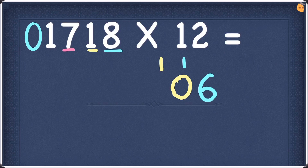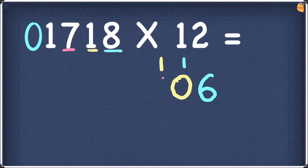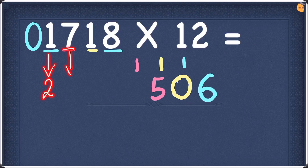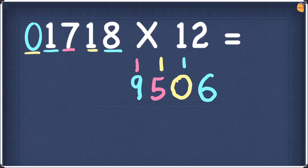Next digit is 7. 7 doubled is 14. 14 plus the number on the right hand side, which is 1, gives 15. Write a 5 and take the 1 as a carry. Next digit is 1. Double 1 gives 2. Add this to the right hand side number, which is 7. 2 plus 7 is 9. Write this 9. Final digit is 0. Double 0 is 0. 0 plus 1 is 1. Write this 1.